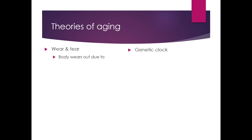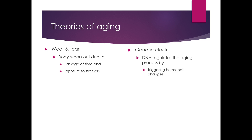The wear and tear theory says that our body wears out due to the passage of time and exposure to stressors, and that these accumulations are what ultimately cause us to start winding down. The genetic clock theory says that DNA regulates the aging process. We have hormonal changes that cause our bodies to start winding down, causing us to stop repairing and reproducing cells as well as we used to — for example, you may have drier skin as you age.